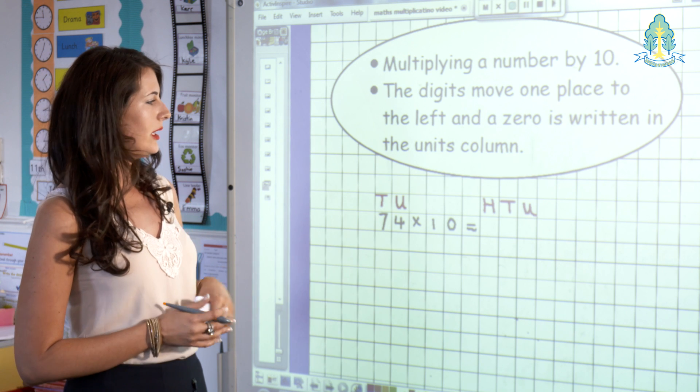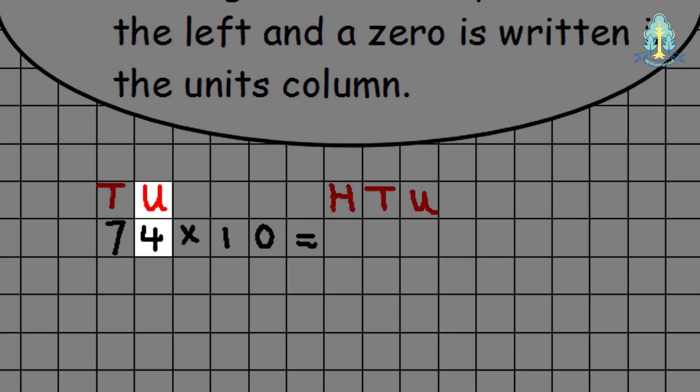So the 4 in the units column moves one place to the left, bringing it to the tens column. The 7 in the tens column now moves one place to the left, bringing it to the hundreds column. Without our column headings, this number would simply look like 74. A zero is placed in the units to hold that place value, giving our answer 740.